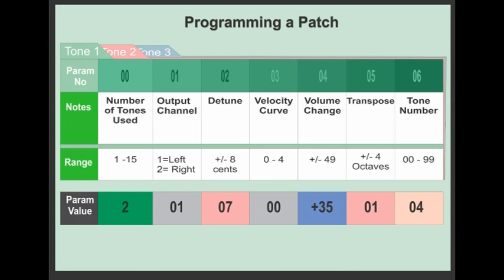So how many tones you're going to use, left or right output, detune, velocity curve, change the volume, transpose, and which tones you're actually going to be used. And that will basically give you all the parameters for a patch. Bear in mind, this green section is just for tone one. If you were programming a patch with three tones, you'd then have to go to tone two parameters and tone three parameters.